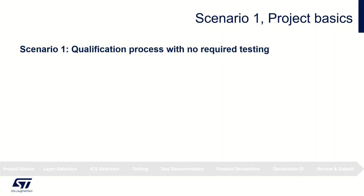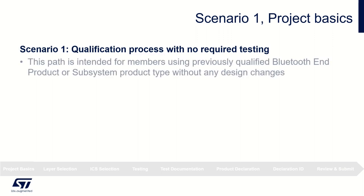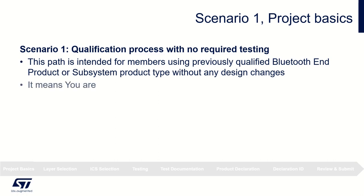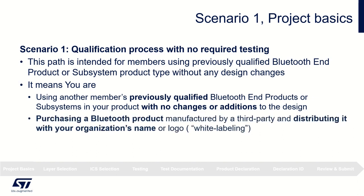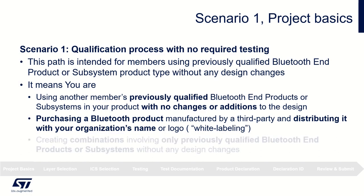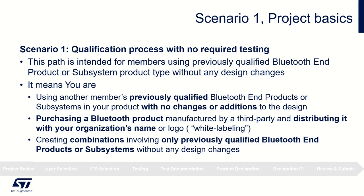The first step is project basics and we have selected qualification with no required testing. This path is intended for members using previously qualified Bluetooth end product or subsystem product type without any design changes. It means you are using another member's previously qualified Bluetooth end products or subsystems in your product with no changes or additions to the Bluetooth design, purchasing a Bluetooth product manufactured by a third party and distributing it with your organization's name or logo, or creating combinations involving only previously qualified Bluetooth end products or subsystems without any design changes.